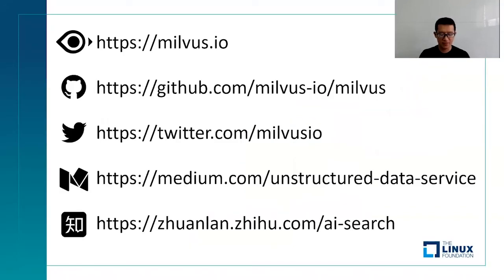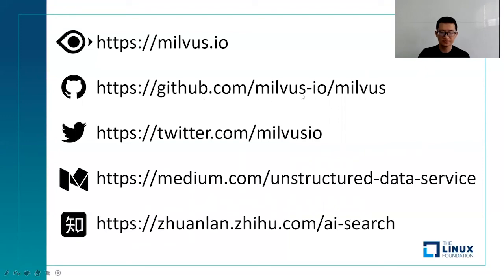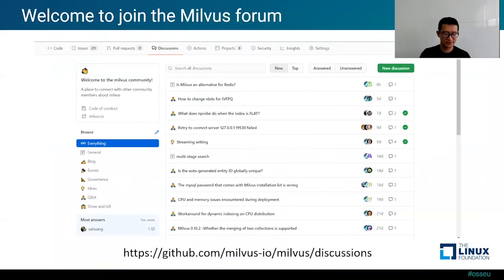Now we've come to the end of my presentation. Here are useful links for the Milvus project. If you want to explore the possibility of introducing AI technology into your applications, please consider Milvus — it will be very helpful. You can find our documentation and benchmark reports on our project website, Milvus.io. This is our GitHub repo. You can also follow us on Twitter, and we have a technology blog on our media publication. We've also enabled the GitHub discussions function, so if you have questions, you can post them there. We welcome everyone to join the Milvus community. Thank you for listening.